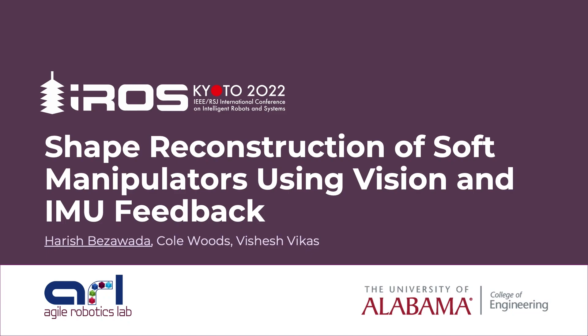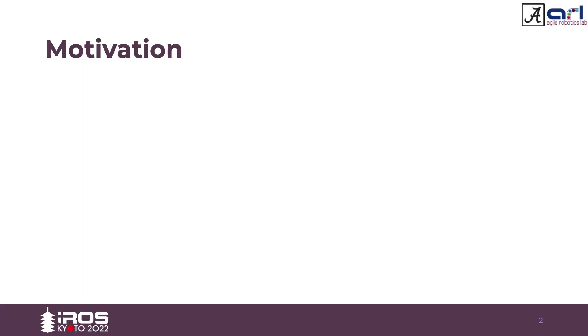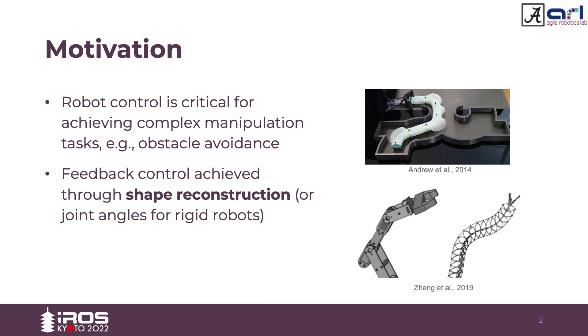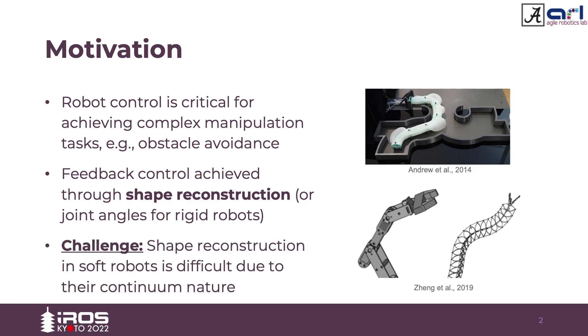Hello everyone, I am Harish from Agile Robotics Lab. Today I am going to talk about shape reconstruction of soft manipulators using vision and IMU feedback. Control of any robot is required for complex manipulation tasks like obstacle avoidance. Knowledge of shape is important for closed-loop control. In rigid robots this can be done using joint angles, however for soft robots this becomes a challenge due to their continuum nature.